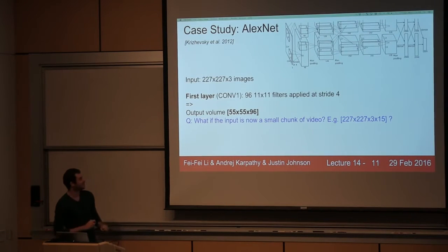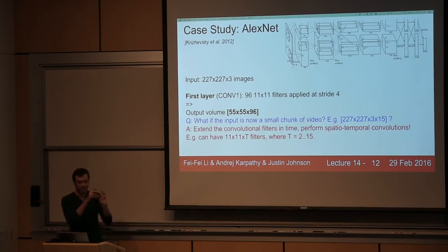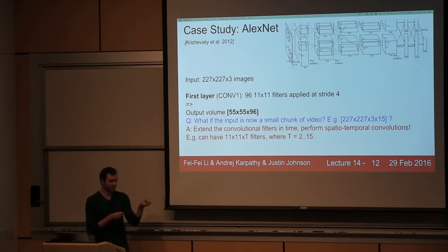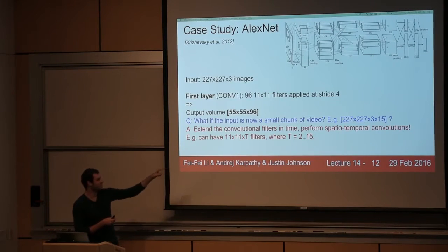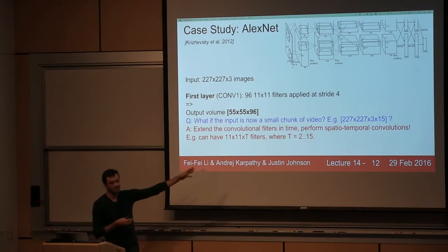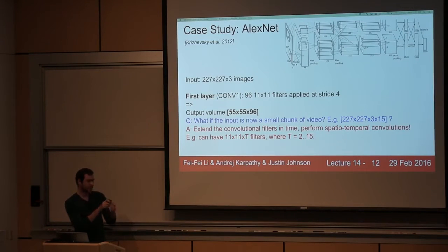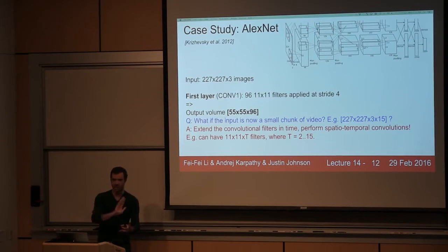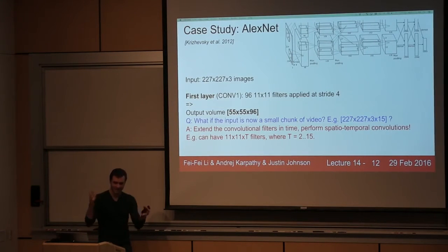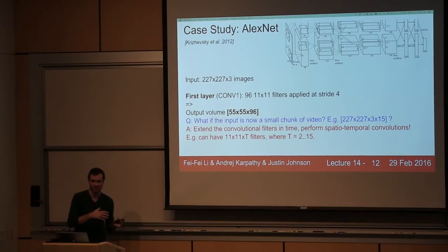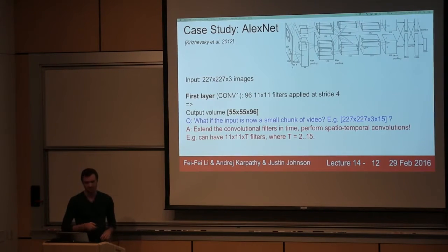Building on that idea: the basic thing people usually do when applying convolutional networks on videos is to extend filters not only in space but also a small amount in time. So instead of 11 by 11 filters, we have 11 by 11 by T filters, where T is some small temporal extent — say 2 up to 15. If T is 3, then we have 11 by 11 by 3 filters by 3 for RGB. Filters now slide not only in space but also in time, carving out an entire activation volume rather than just an activation map.